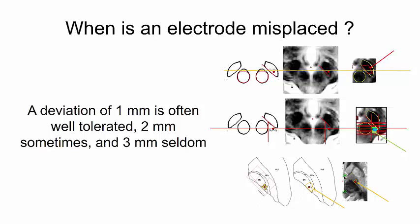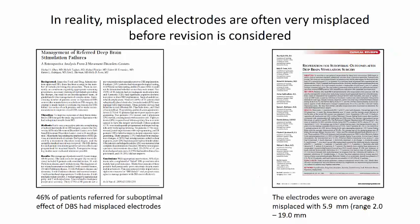So, when is an electrode misplaced? We have often heard the statement that the deviation of 1 mm is often well tolerated, 2 mm sometimes, and 3 mm seldom. I believe this to be quite true. However, in reality, misplaced electrodes are often very misplaced before revision is considered, as seen in these two studies by the group of Aukun.